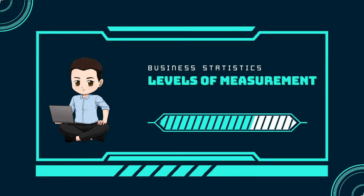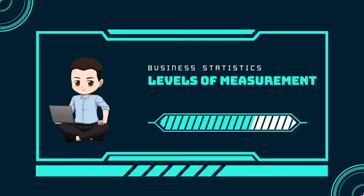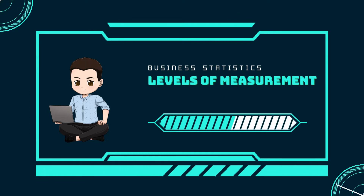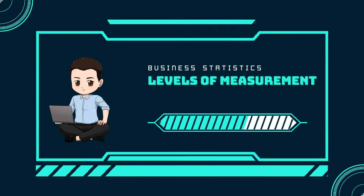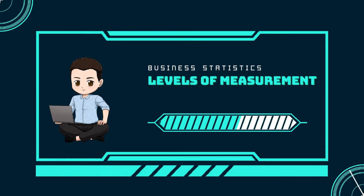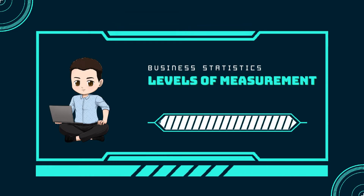The way a set of data is measured is called its level of measurement. Correct statistical procedures depend on a researcher being familiar with levels of measurement. Not every statistical operation can be used with every set of data. Data can be classified into four levels of measurement: nominal scale level, ordinal scale level, interval scale level, and ratio scale level.